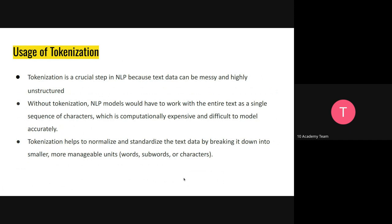Tokenization is a crucial step in NLP — natural language processing — because normally when we have text data spread from different resources, data is usually messy and highly unstructured. Without tokenization, passing all this messy data will not make modeling easier. The model's accuracy will be really low, so tokenization helps to minimize those noises in our data.